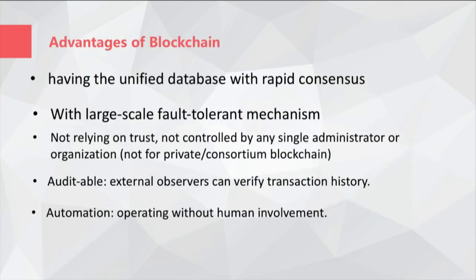The advantages of blockchain are listed here. It has a unified database with rapid consensus, which allows settlement to be completed within three to sixty seconds rather than three days or more. It offers very large-scale fault tolerance in which the system can withstand 33 to 40 percent node failure and still operate normally, even under the control of hackers.